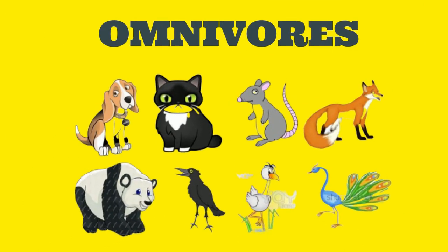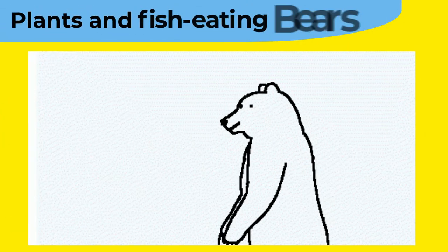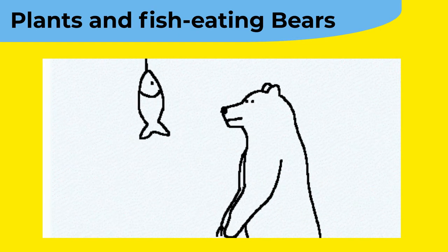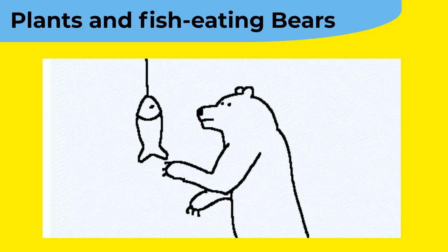And some animals eat both plants and animals, so they are called omnivores. For example, the plants and fish-eating bears.